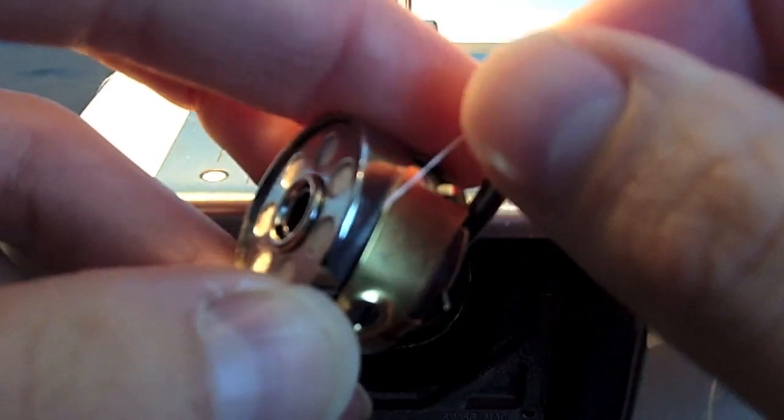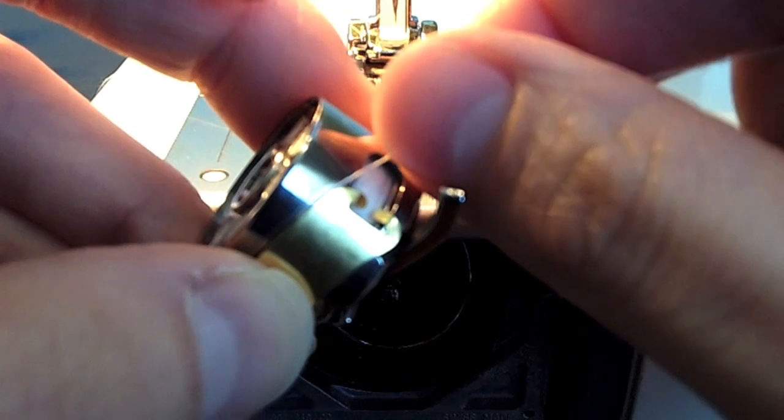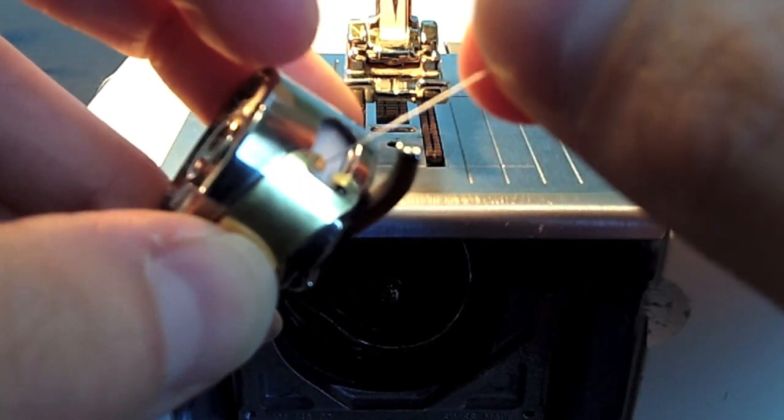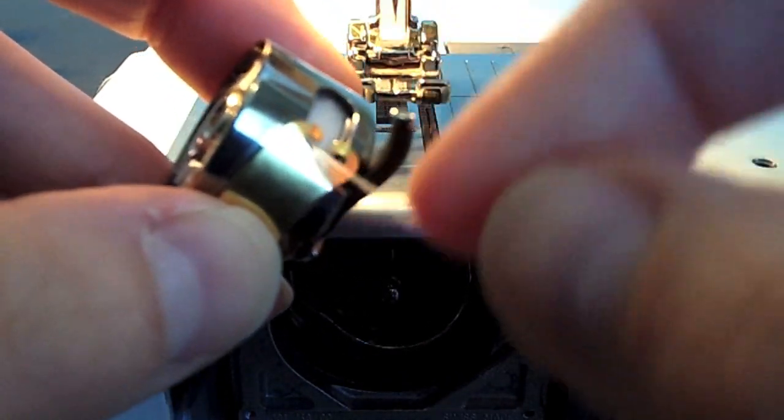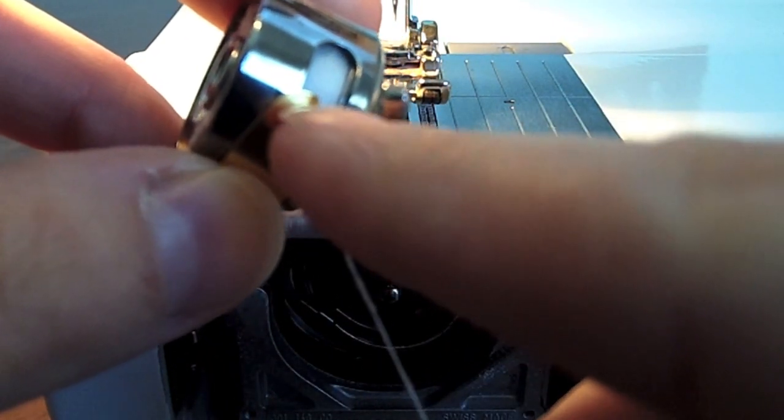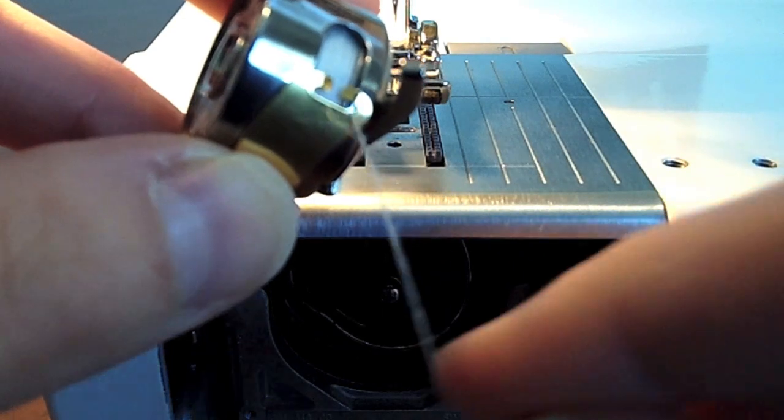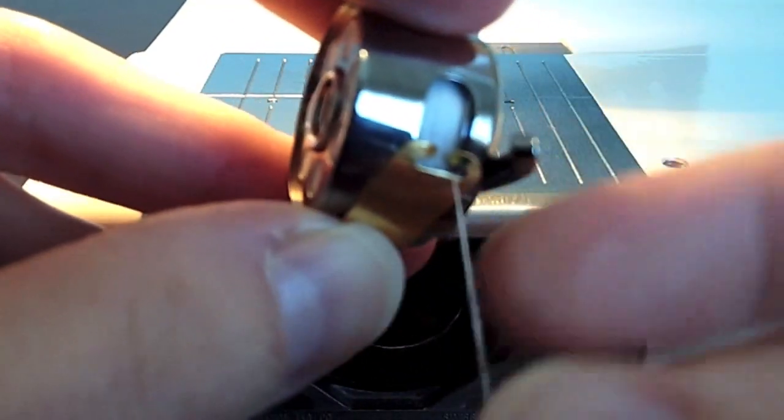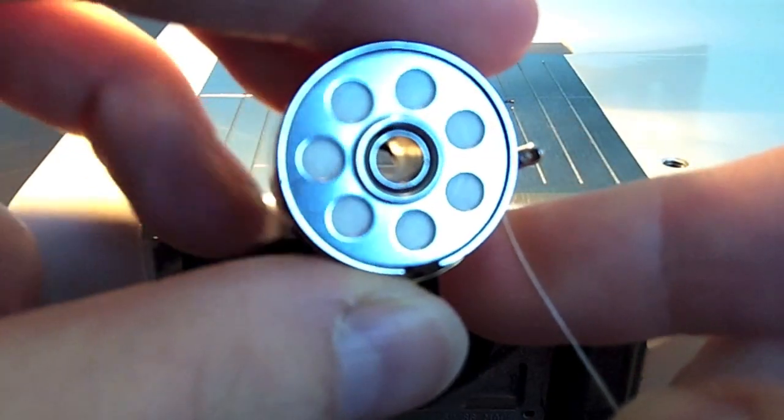Then we need to make the thread go up and under this little metal blade on the front, and pull the thread through to make sure it's sitting in that little groove there. When you pull the thread, the bobbin should move in a clockwise direction like so.